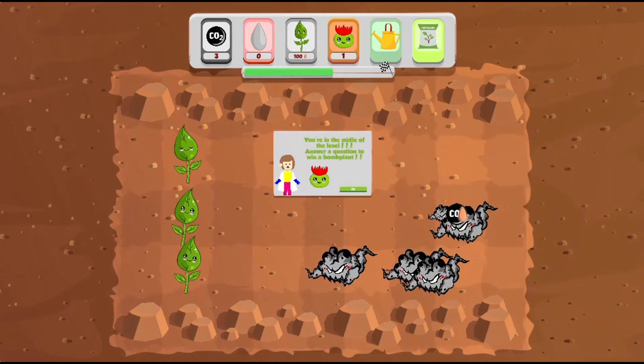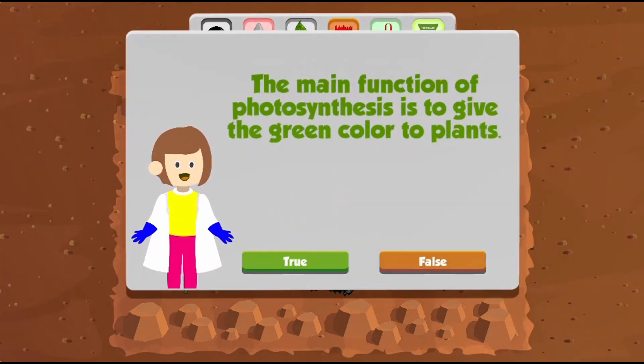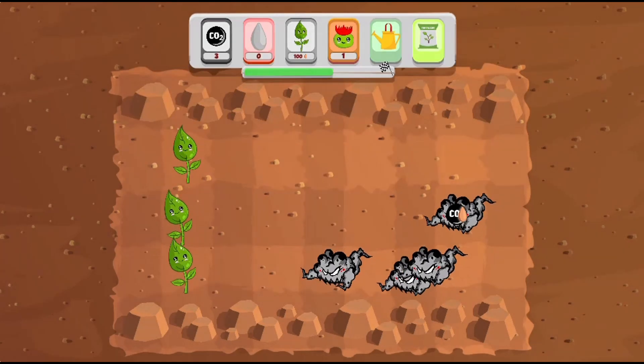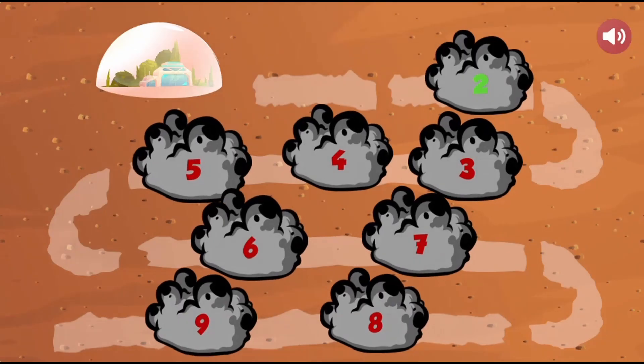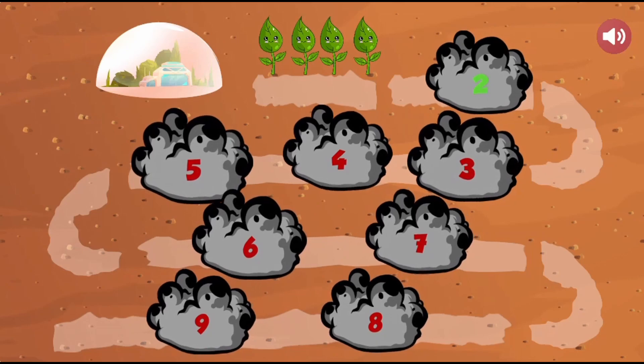Read interesting science facts to help you learn more about photosynthesis. Convert CO2 to oxygen and use water and fertilizer to help grow your plants to place more plants to defeat the monsters.